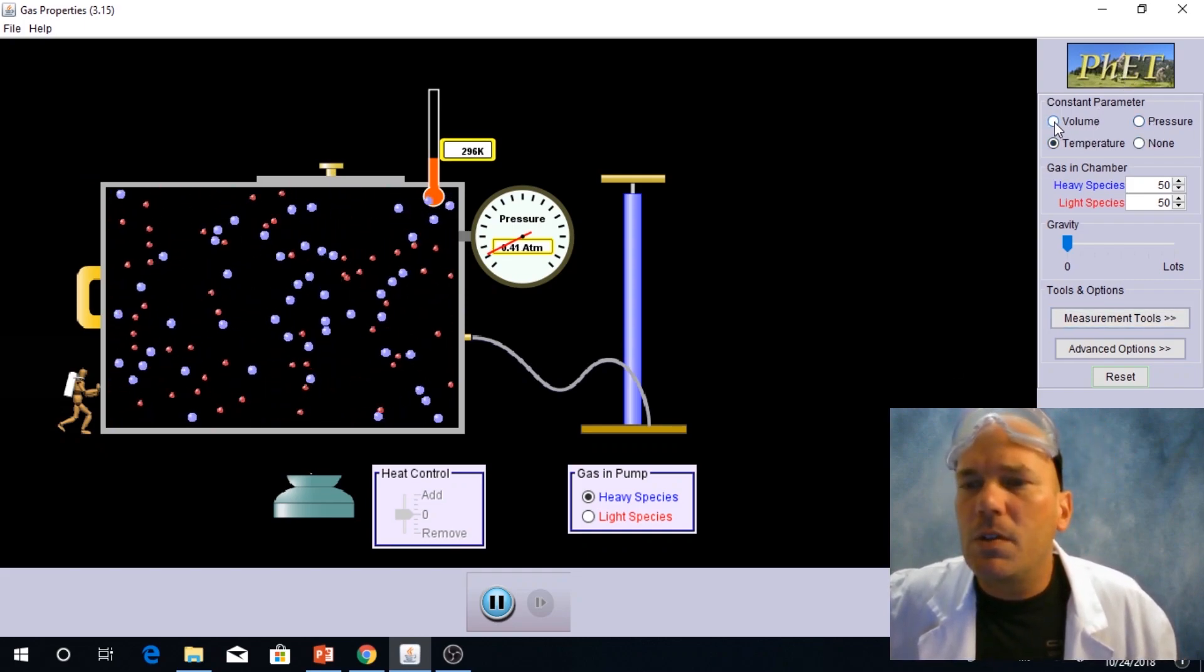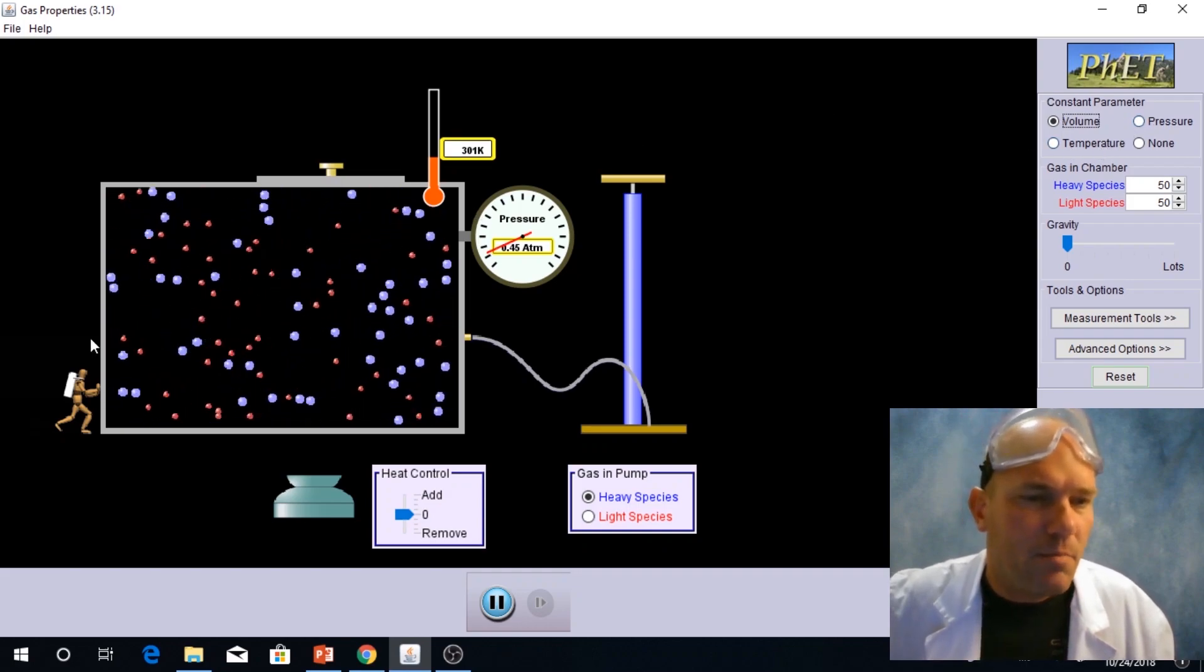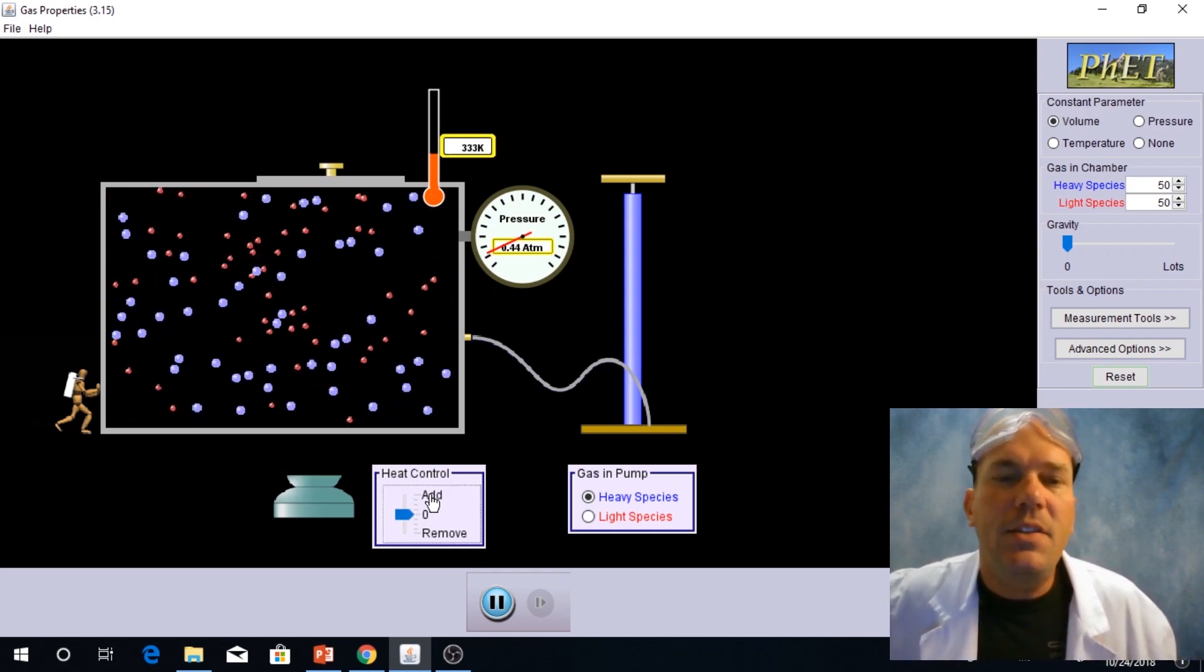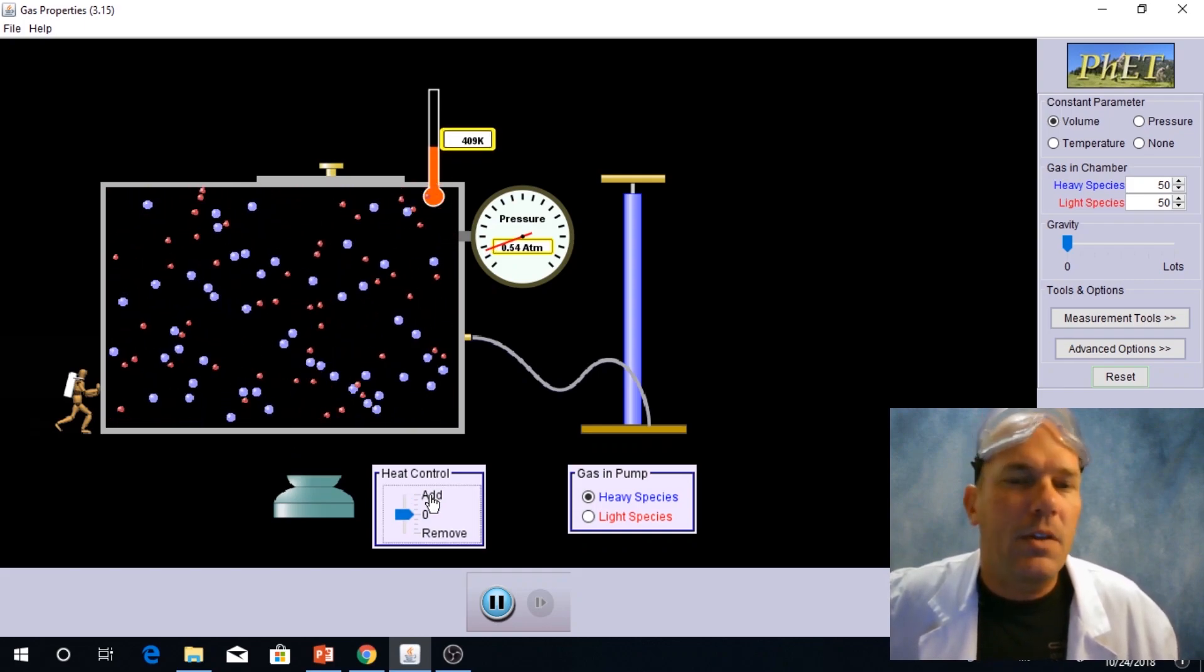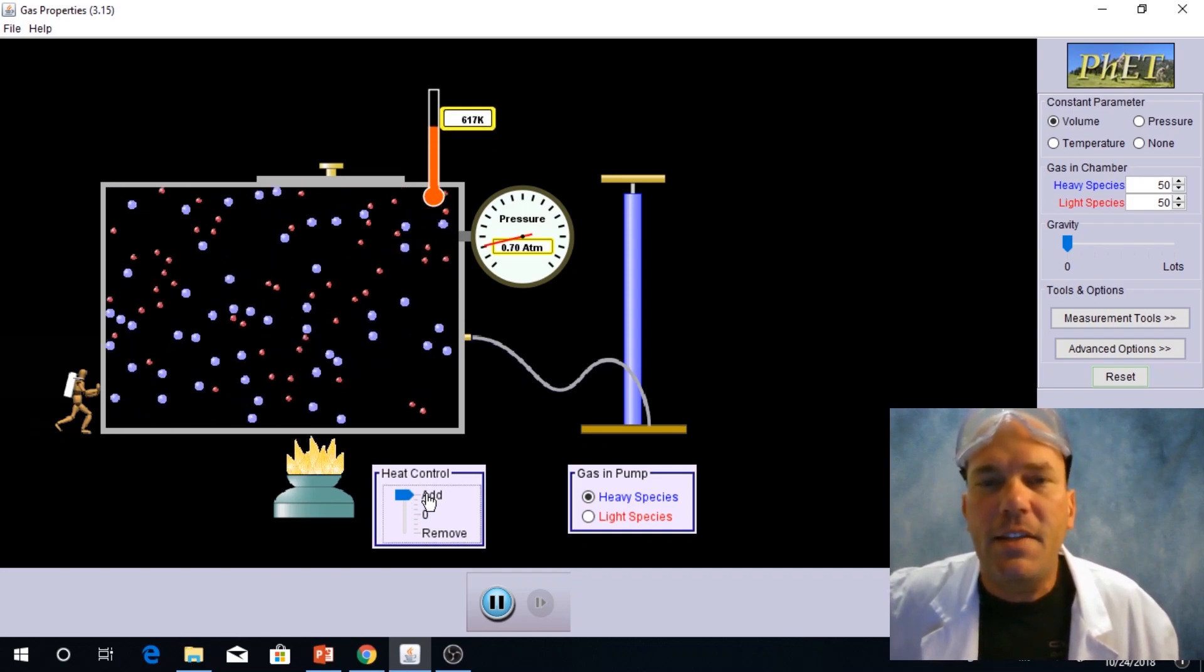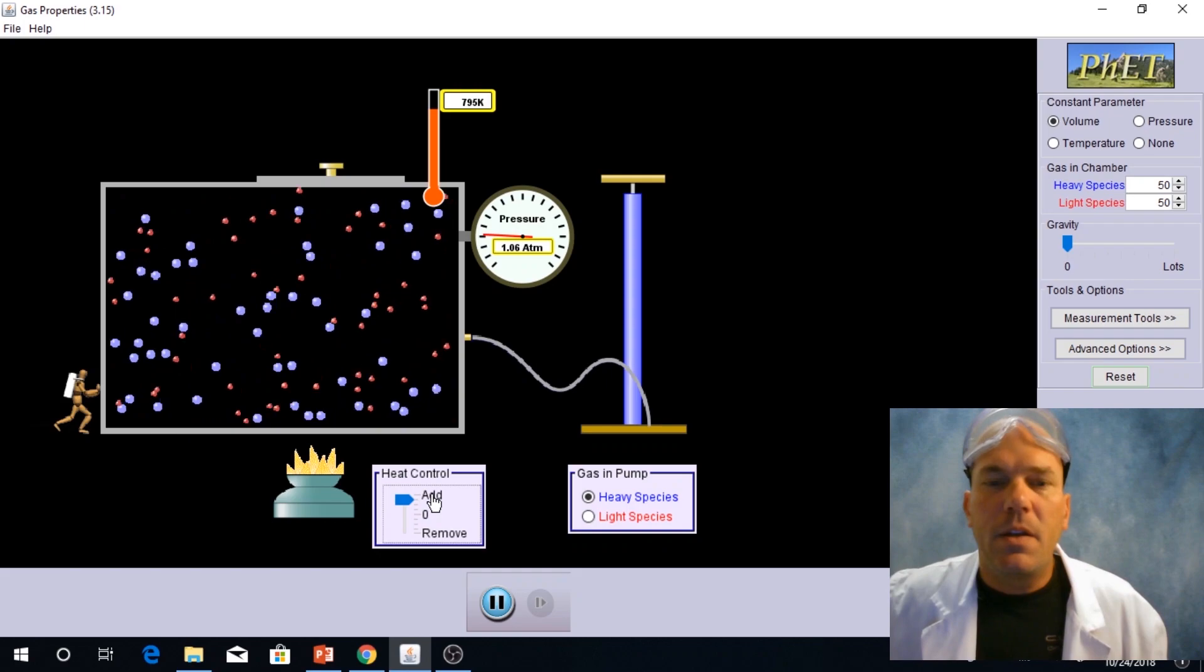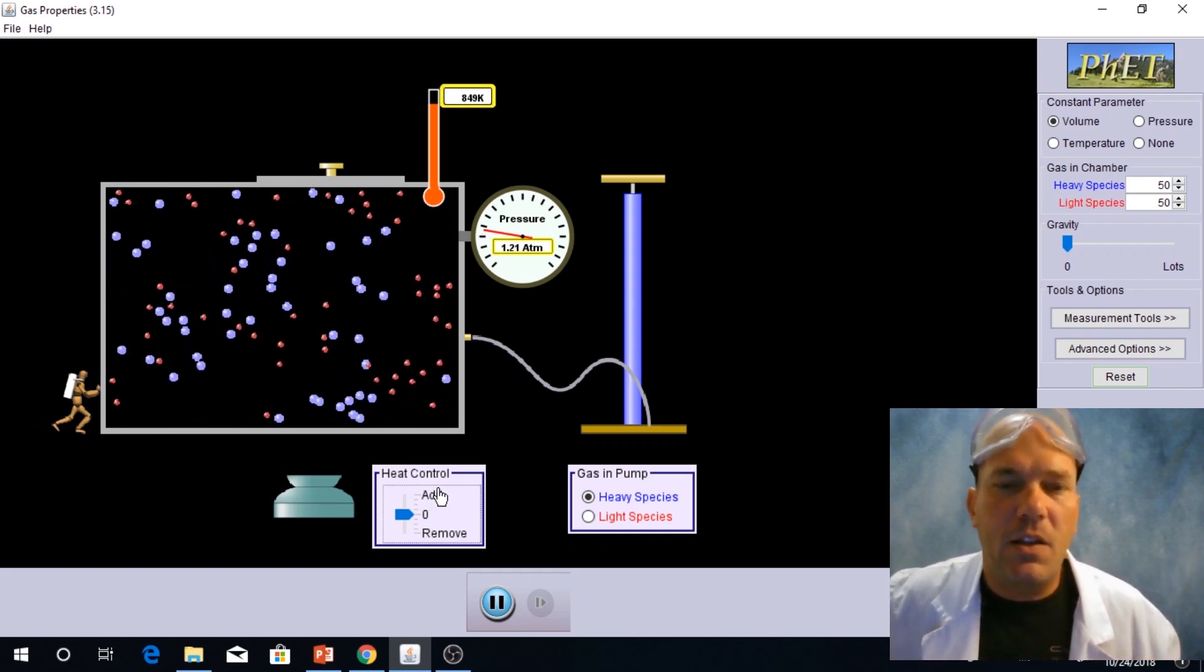Now I am going to hold the volume constant, and I want to compare pressure and temperature. So volume is constant. I'm going to add heat to the system. As I add heat, you can see based on the thermometer here, I'm approaching now over 400 Kelvin. I'm going to continue to add heat, and I want you to look at the pressure gauge. As the temperature goes up, the pressure goes up if volume is held constant.